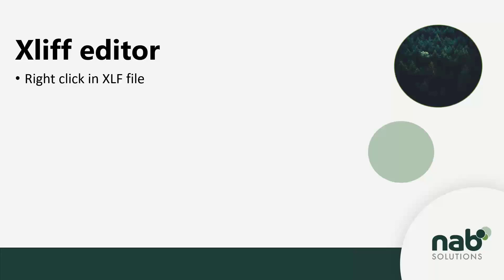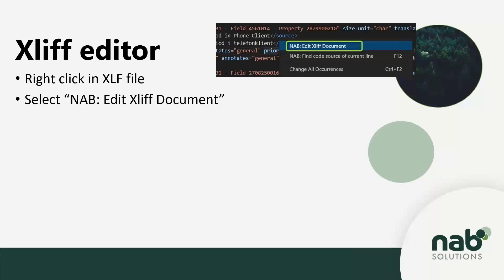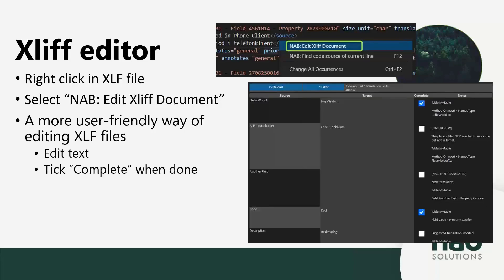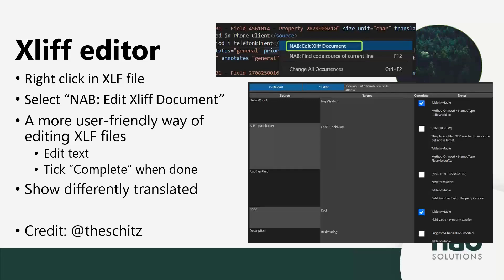The 'Refresh XLF from GXLF' updates all XLF files from the GXLF file after you build your application. It adds new translation units, adds suggestions that match your source, removes deleted translations, detects common errors like missing placeholders, and updates sources. It marks all translation units that need attention with 'NAB:' tags — not translated, review, or suggestion. A note is also added with a description explaining why the unit is marked for review, for example because it's missing a placeholder. We also have the XLF editor — right-click an XLF file and select 'NAB: Edit XLF Document' to get a visual editor that is a more user-friendly way of editing XLF files.